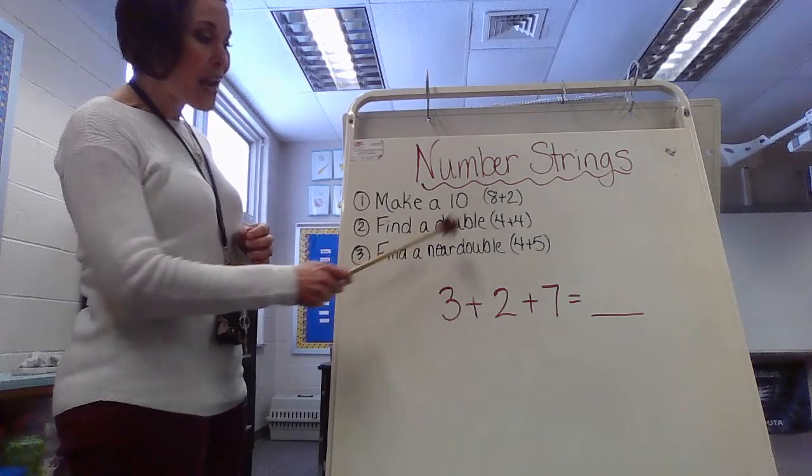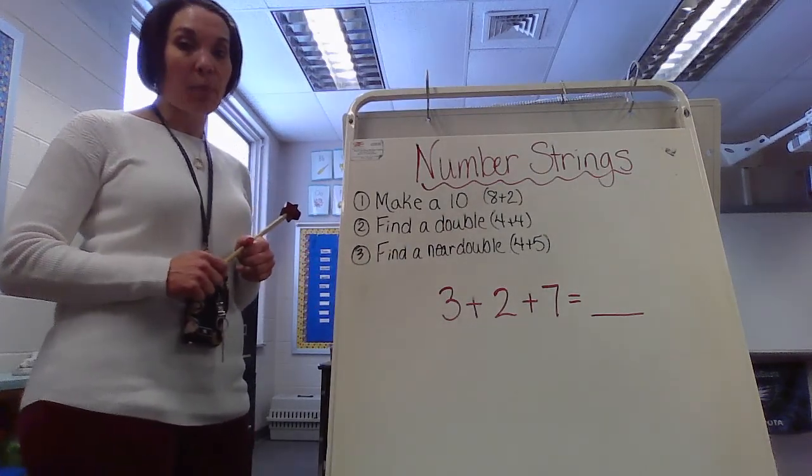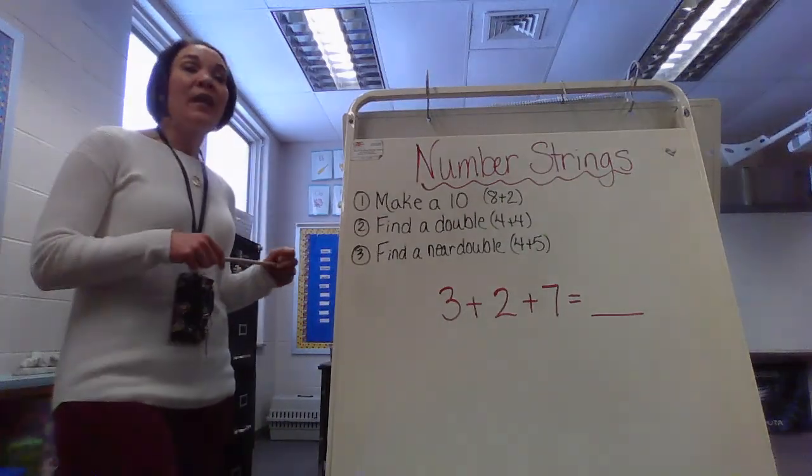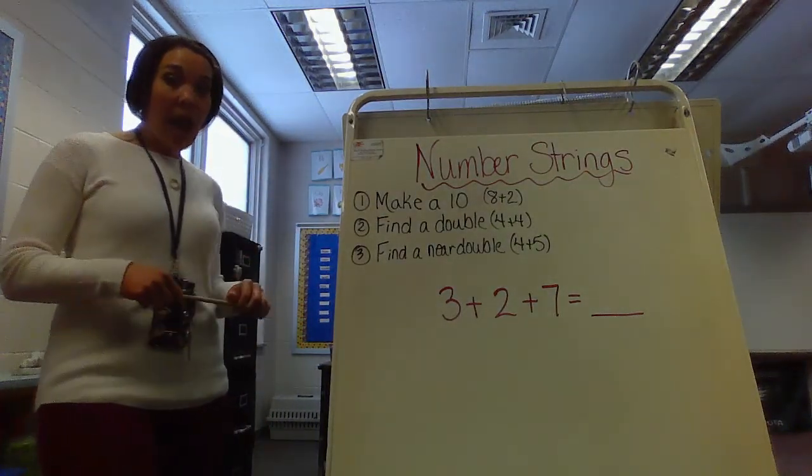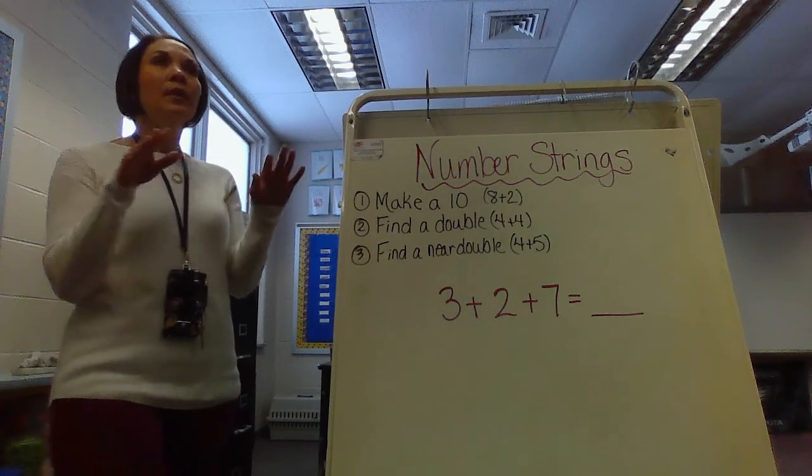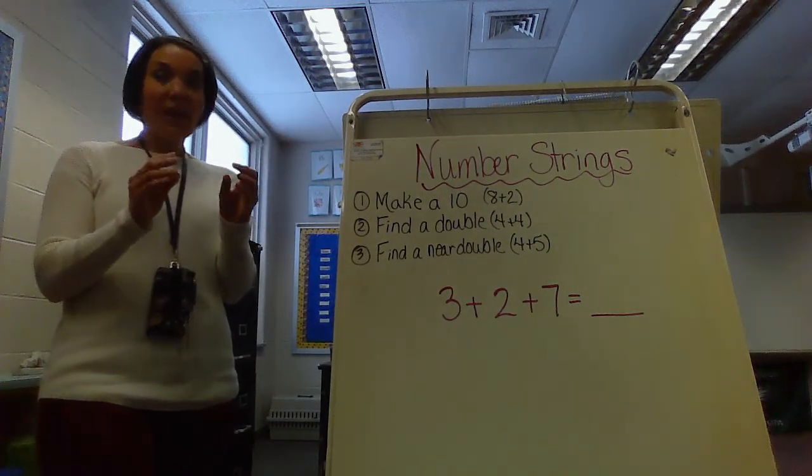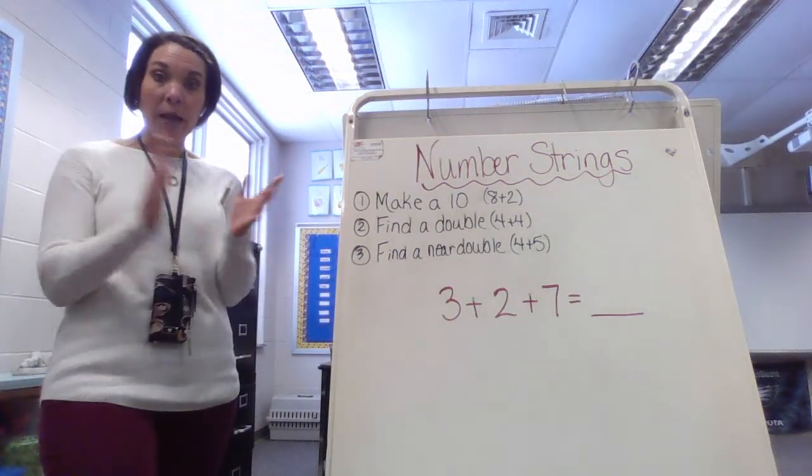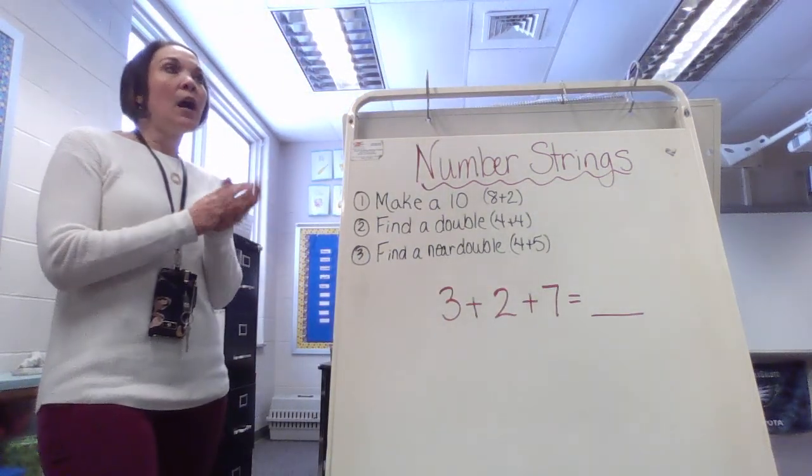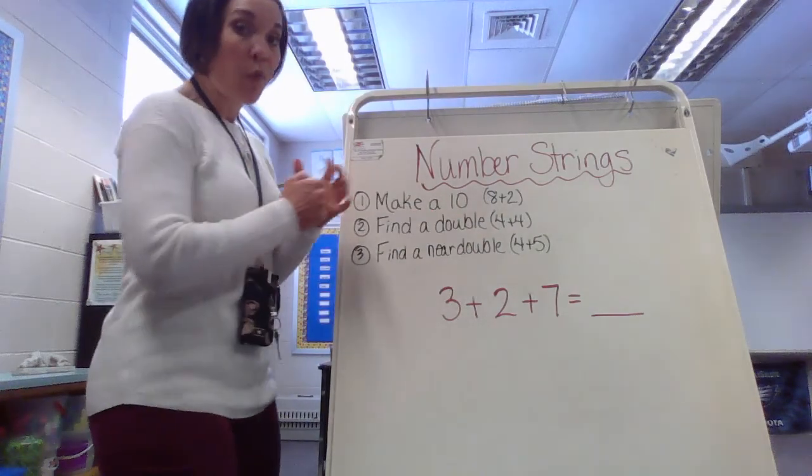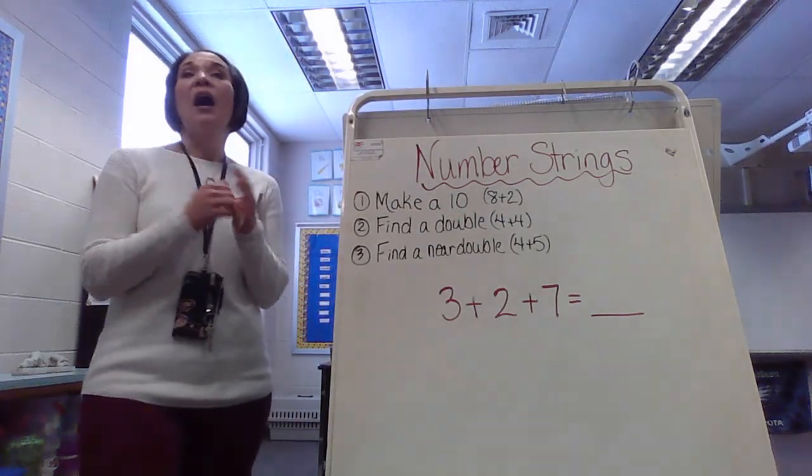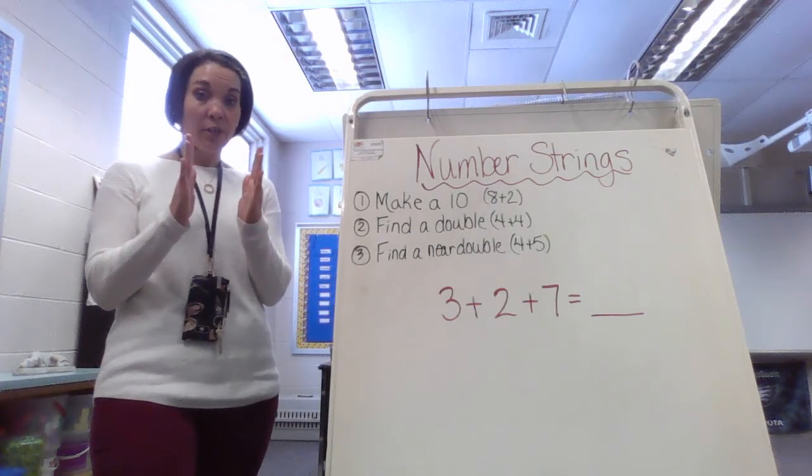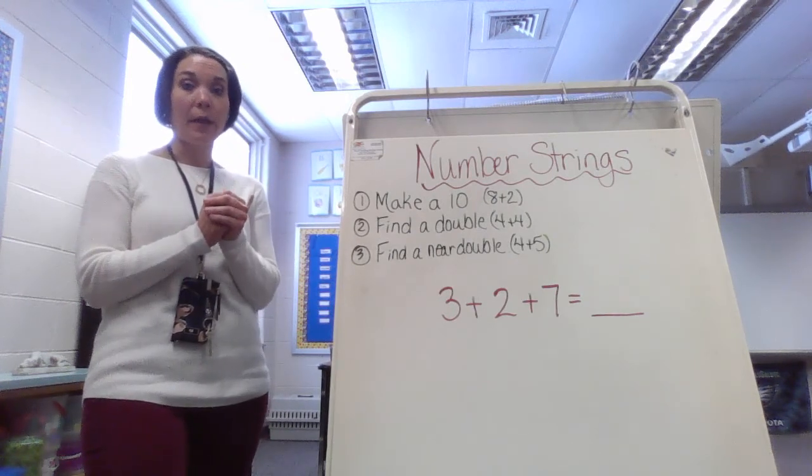And then find a near double. I do have an example of a near double, which is 4 plus 5. A near double is a number sentence where the two numbers can be directly right next to each other on a number line. For example, a near double here I have is 4 plus 5. I have another one, 2 plus 3.